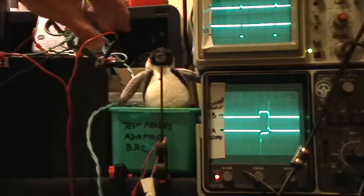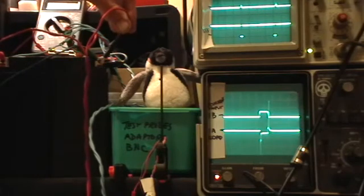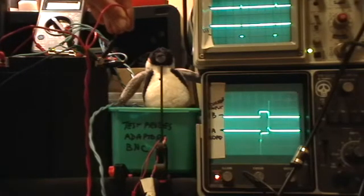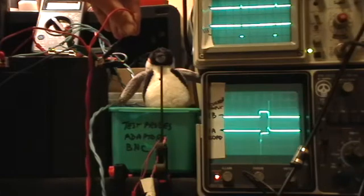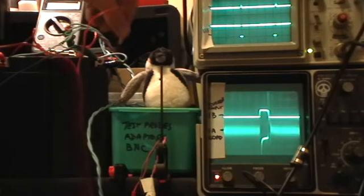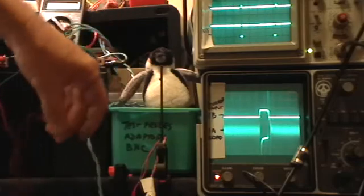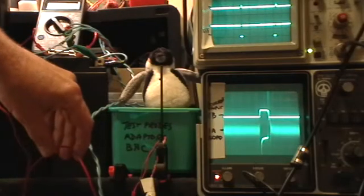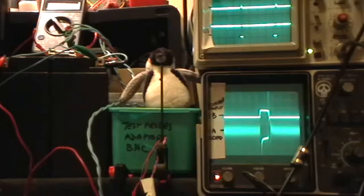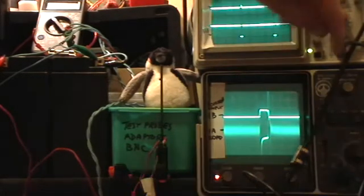Now I'm going to disconnect the negative power lead to the Ainsley circuit from the battery. Are you ready for this? Look at that. You see that? Isn't that something? Now we'll switch the triggering over to the A load.